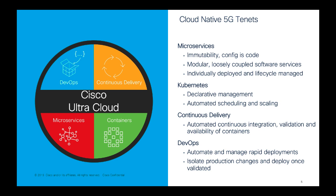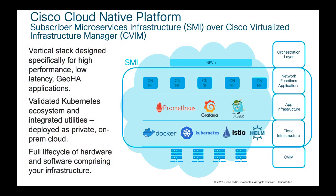Moving to Cisco cloud-native architecture, we have the Subscriber Microservices Infrastructure, so-called SMI, which sits over Cisco Virtualized Infrastructure Manager, CVIM. It provides a vertical stack design for high performance and low latency. In this vertical architecture, the first layer is the infrastructure — the OpenStack, which is created and deployed by CVIM. The next layer is the cloud infrastructure itself, which includes Docker, Kubernetes, Helm as a chart manager.